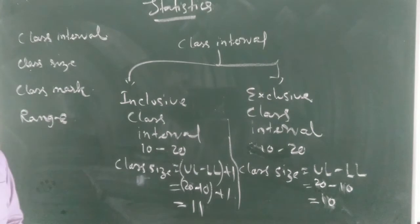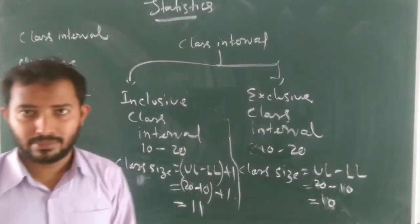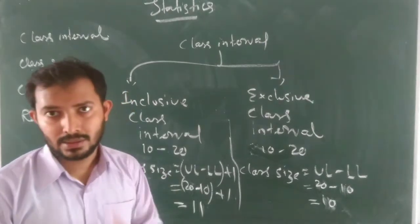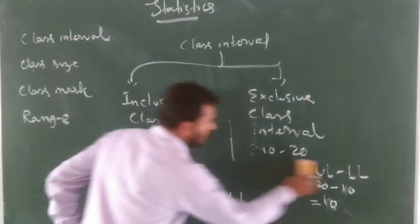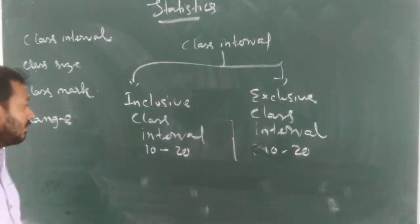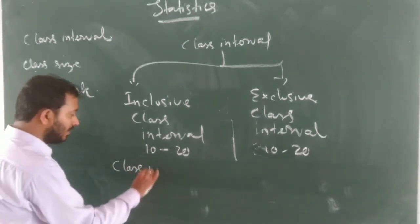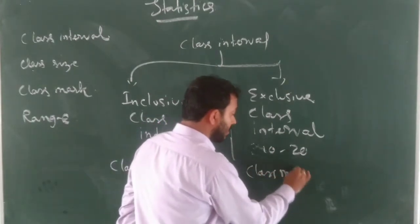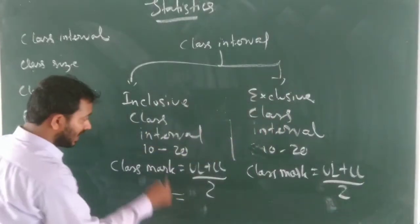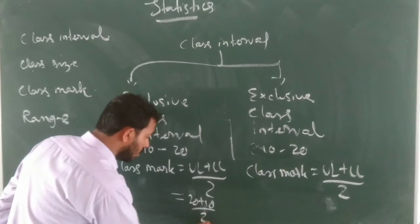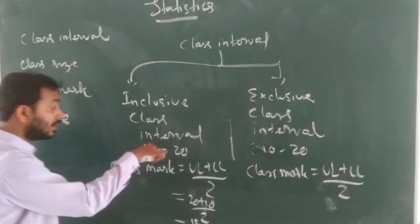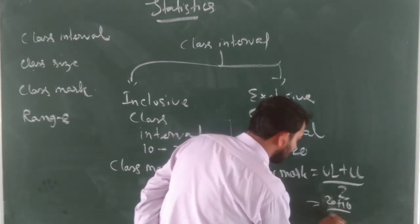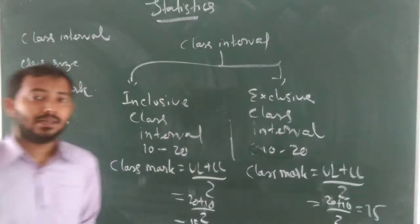Now we will go for class mark. Before that, class size has three names: class width and height of the class. Now, what do we mean by class mark? It is the middle value of the class interval. Both inclusive and exclusive have the same formula: class mark = (upper limit + lower limit) / 2. For example, (10 + 20) / 2 gives 15, and 15 is in the middle of 10 to 20. Both types give the same result — no difference between these two.